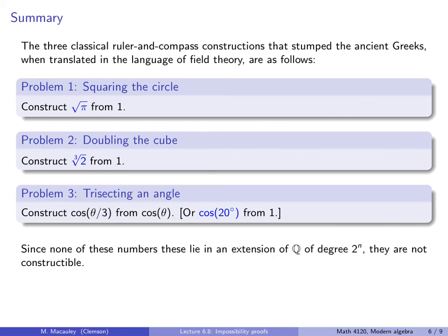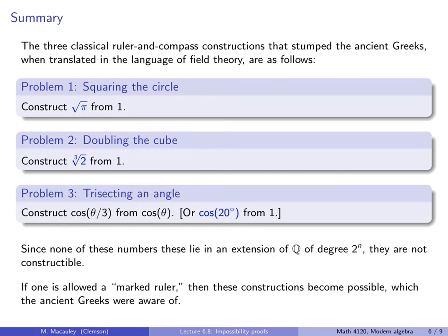Since none of these numbers, the ones in blue, meaning root pi, cube root of 2, or the cosine of 20, lie in an extension of the rationals of degree 2 to the n, they are not constructible.